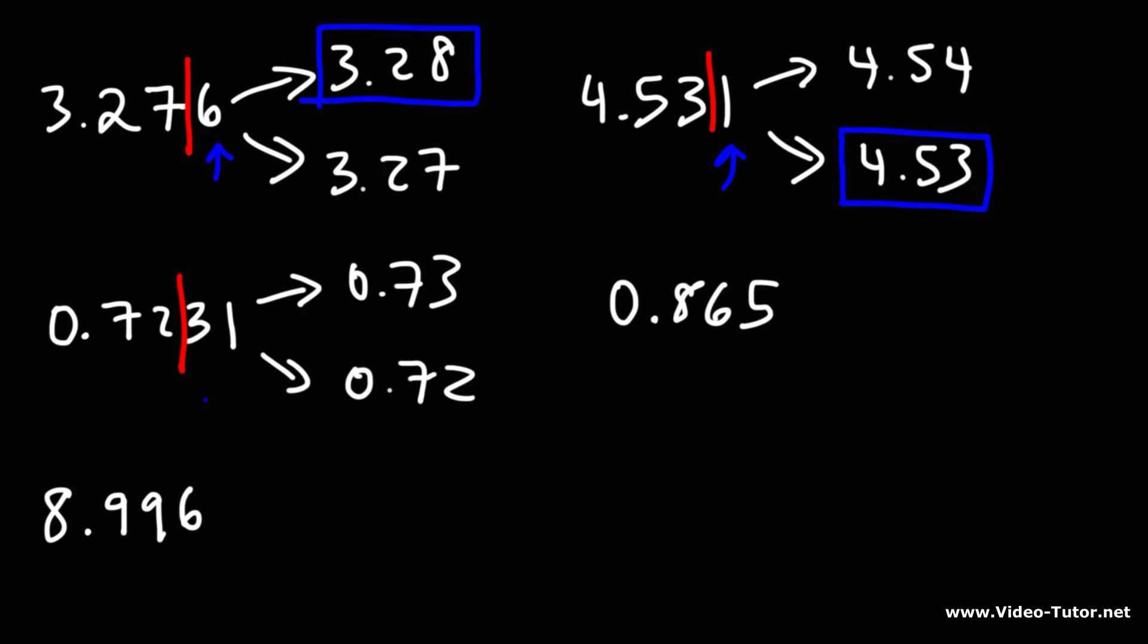Now, looking at the digit to the right, 3 is less than 5. It's part of the 4 or less group. So we need to round it down to 0.72.